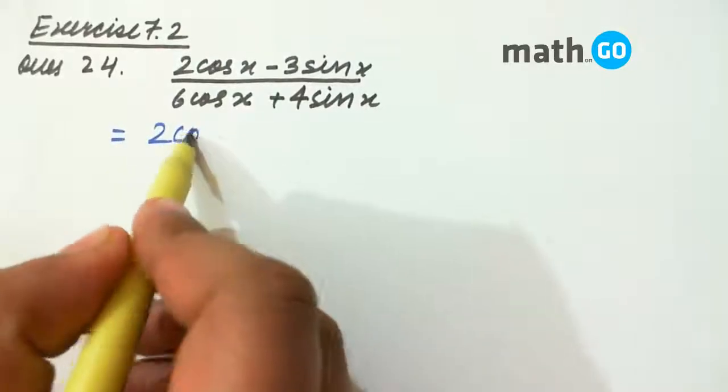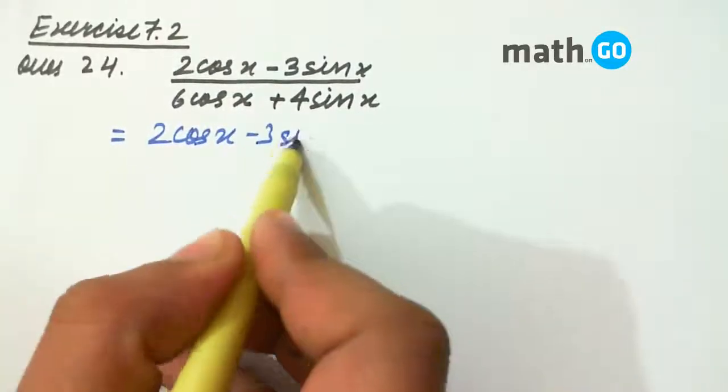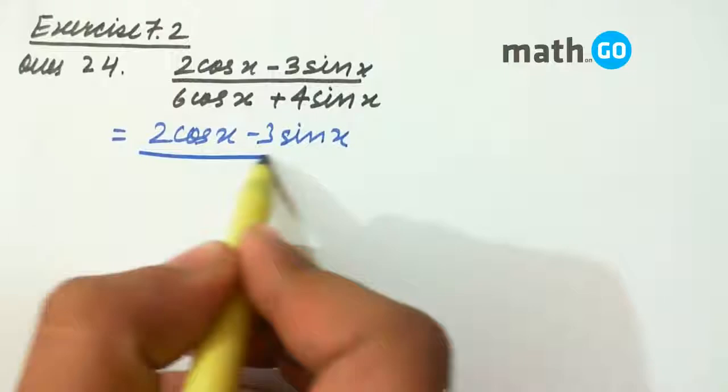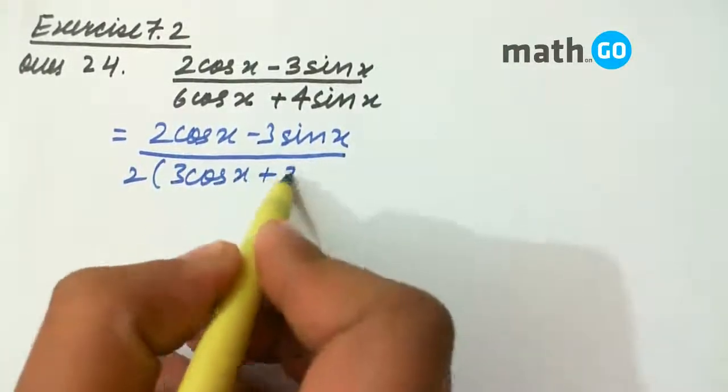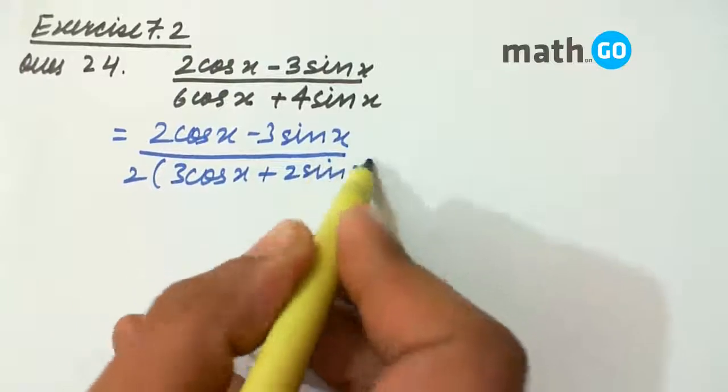Let us see. 2 cos x minus 3 sin x upon 2 common, 3 cos x plus 2 sin x.